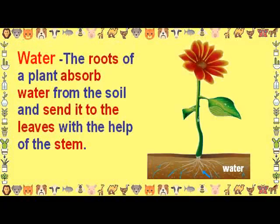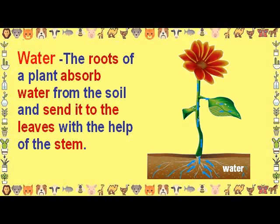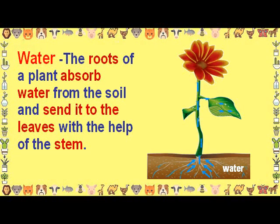During photosynthesis, food is prepared in the form of sugar and oxygen is given out by the leaves. The roots of a plant absorb water from the soil and send it to the leaves with the help of the stem.